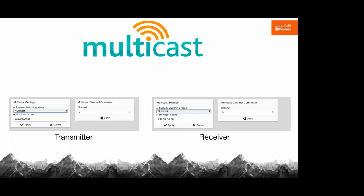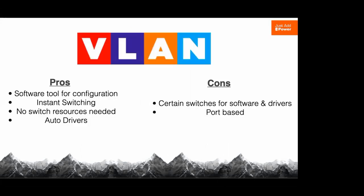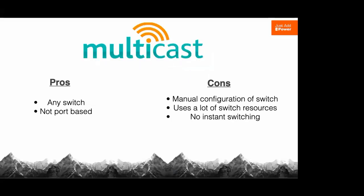The pros of VLAN switching: a software tool that does it all for you, instant switching, uses zero switch resources because it's not using the switch processor, and auto drivers that work with it. The con is a specific recommended switch list, and it is port-based. The pros of multicast switching: use any switch as long as it meets minimum requirements like gigabit and IGMP snooping; it's not port-based. The cons: some manual switch configuration, it does use the switch processor to monitor multicast join/leave requests, and you lose instant switching — you'll get a one-to-two second switch time inherent in that type of setup.